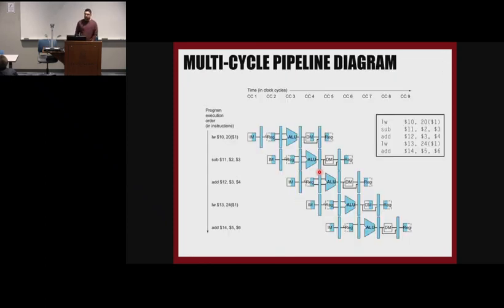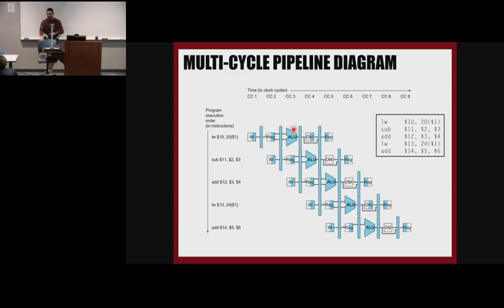This is where we stopped — an example of five instructions that we want to run in the five-stage pipeline. These instructions don't have any dependencies. Brendan asked a question last time, and this is the session I'm going to address that problem. There are situations where instructions have dependencies, and if there is a dependency, we can't send the instruction one after another in every clock cycle. We should somehow fix that dependency problem.